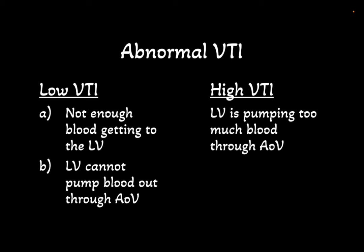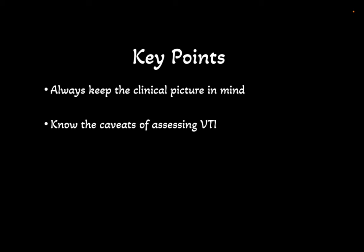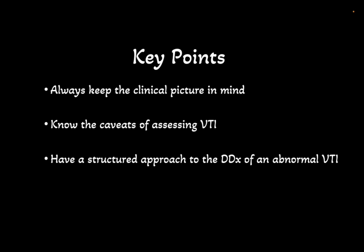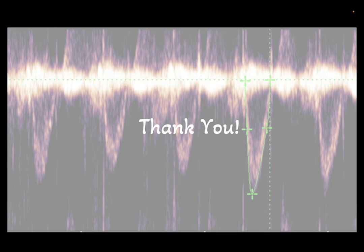There you have it. I hope this has provided you with an approach to diagnose the cause of your patient's shock by using the VTI. Some key take-home points: Always remember to keep the clinical picture in mind. Assess whether your patient is in shock and if so, is the VTI consistent with the clinical context? Remember the caveats to acquiring and interpreting your VTI — I refer you to Western Sono's excellent screencast on this topic. Always have a structured approach to assessing the cause of an abnormal VTI using the above framework. Finally, remember to trend your VTI after interventions — this helps you determine if your diagnosis was correct and to assess your response to therapies. Thank you for listening and see you again.